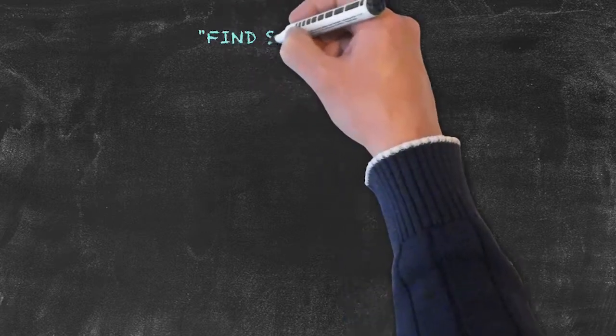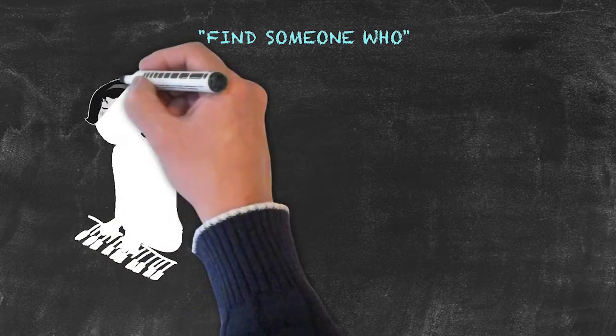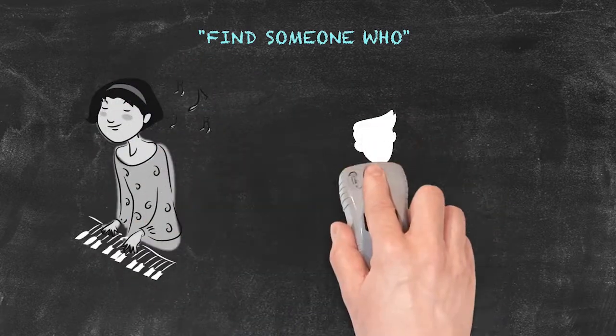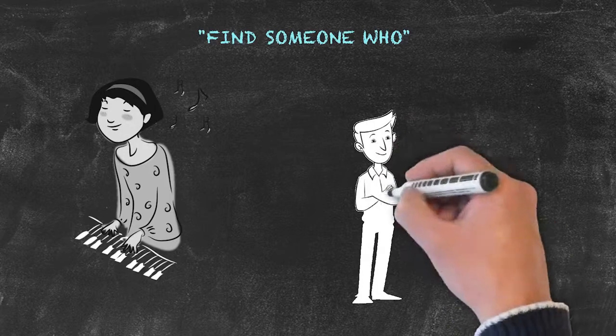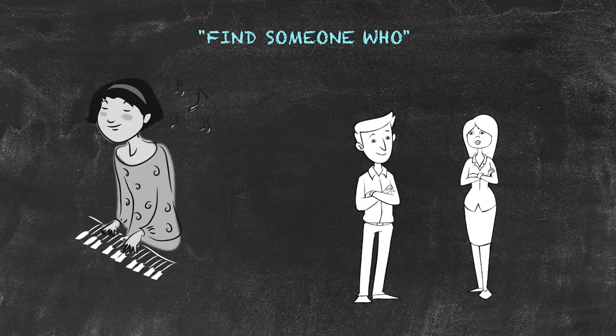Our first example of a teaching idea for the present simple tense will be a classic activity called find someone who. Here we'll be trying to find someone who has a general truth, such as the ability to play a musical instrument or the fact that they have a brother and a sister.